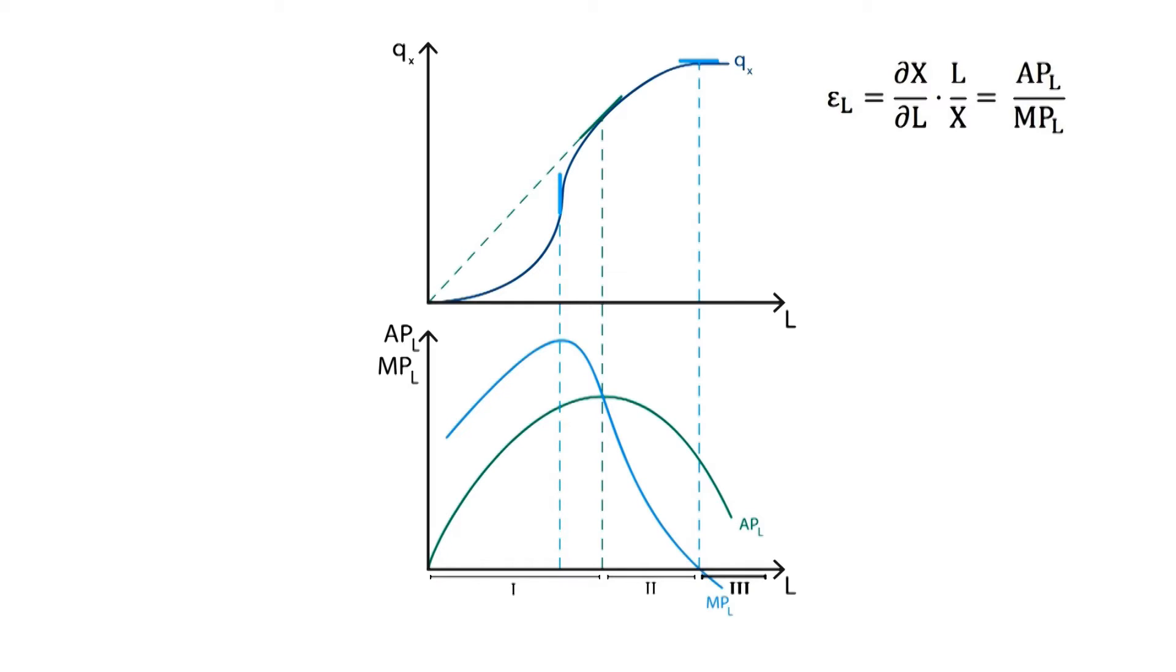In Phase 3, output elasticity is below 0. Marginal productivity is negative, making continued production technically inefficient.